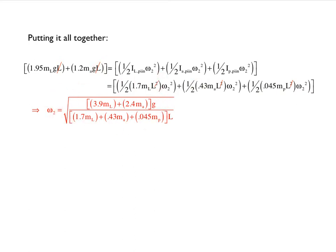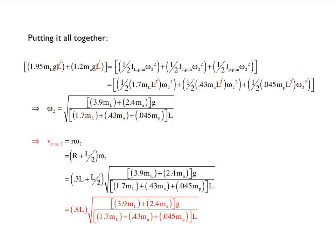And if you wanted to figure out what the velocity of the center of mass of the arm was, you'd have to take little r omega, which would be capital R plus L over 2 times omega. Capital R was 0.3L. Basically you do the math and this is what you come up with. So conservation of energy, very powerful if you're trying to figure out velocities with rotating bodies. That's it.